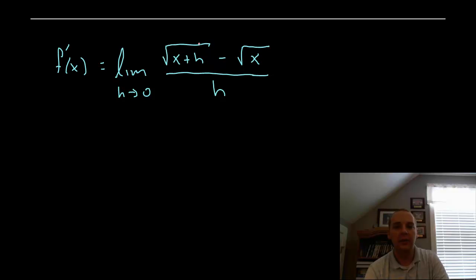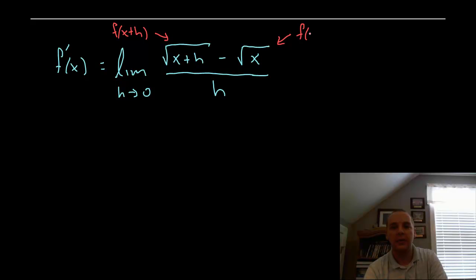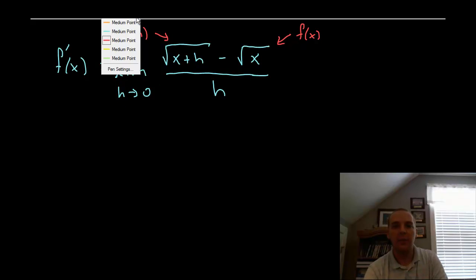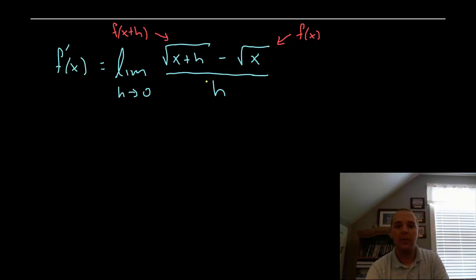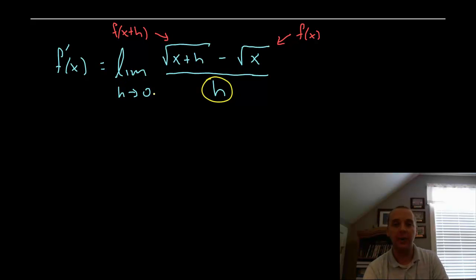I've filled in the expression: f of x plus h is the square root of x plus h, minus f of x which is the square root of x, all over h. If I can evaluate this limit, I'm done. The problem with every limit definition of derivative problem is that h is in the denominator but you're taking the limit as h goes to zero — so if you let h be zero analytically, you get division by zero, and that's bad.